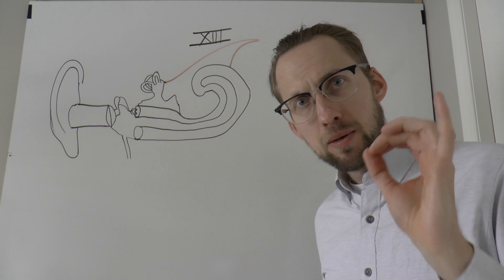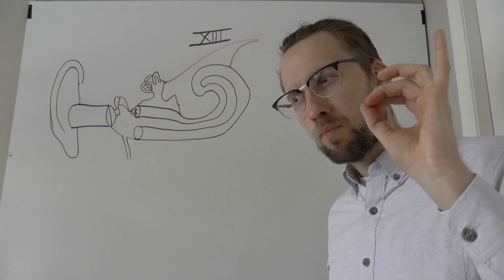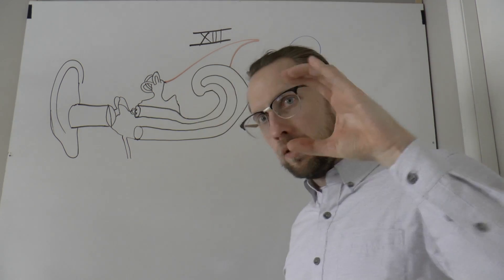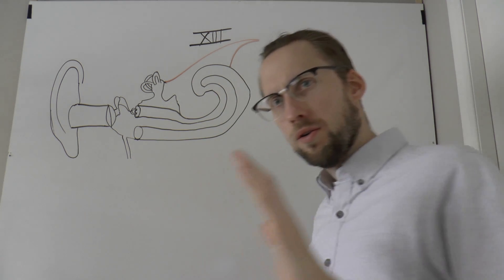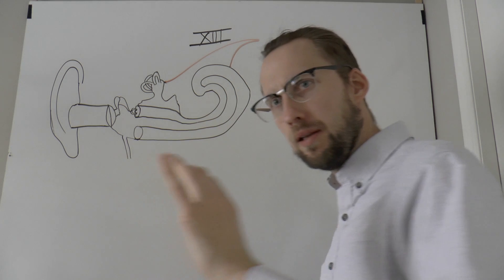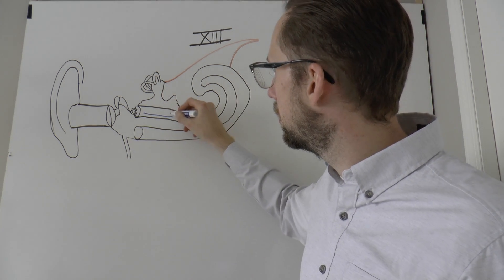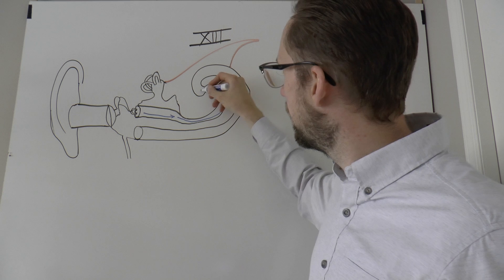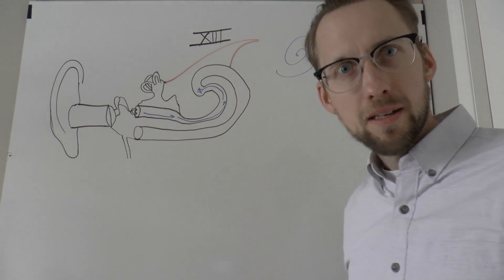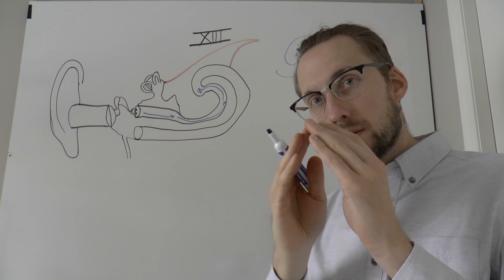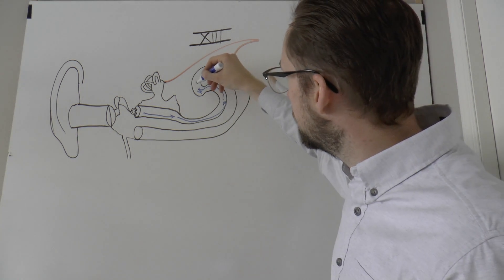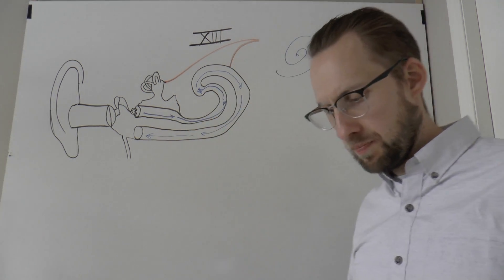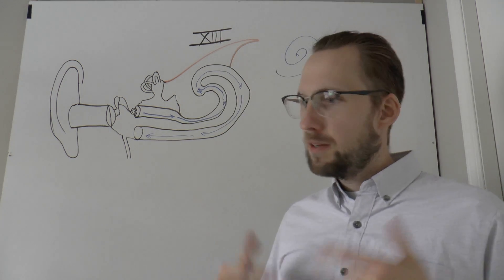Here's the flow: stirrups onto the oval window create a wavy pattern, make the liquid move, and that liquid streams in this direction. Then it hits the helicotrema — the point where the two tunnels connect — and continues moving through the second tunnel.